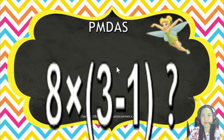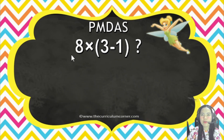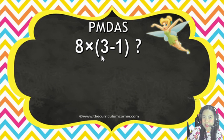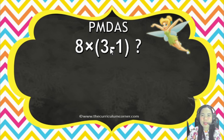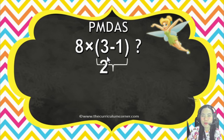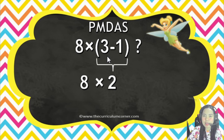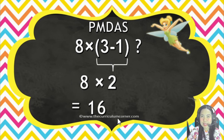PEMDAS. We have 8 times, and there is a parenthesis, so inside the parenthesis is 3 minus 1. In PEMDAS, P comes first, which is parenthesis, so we solve that first. 3 minus 1 equals 2, then multiply by 8. So 8 times 2, the answer is 16.